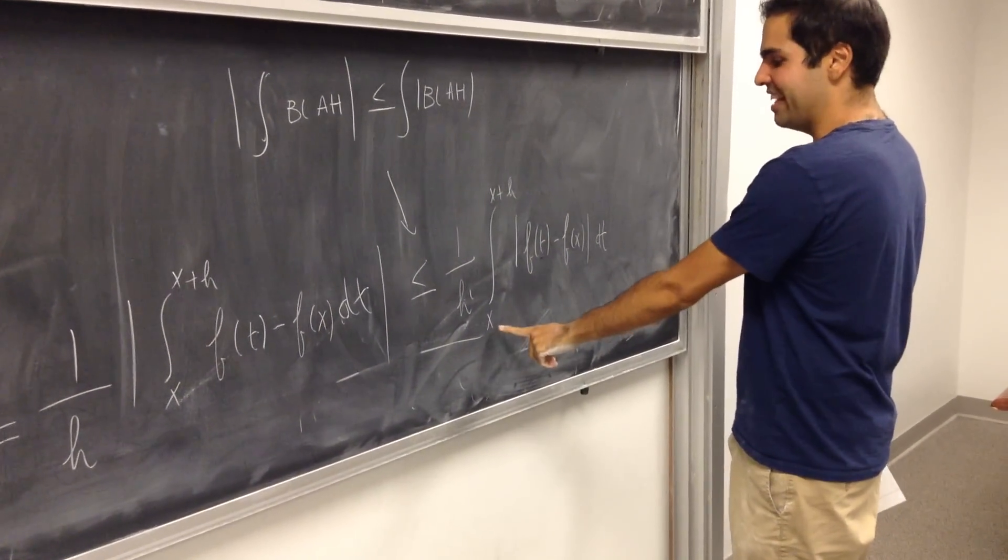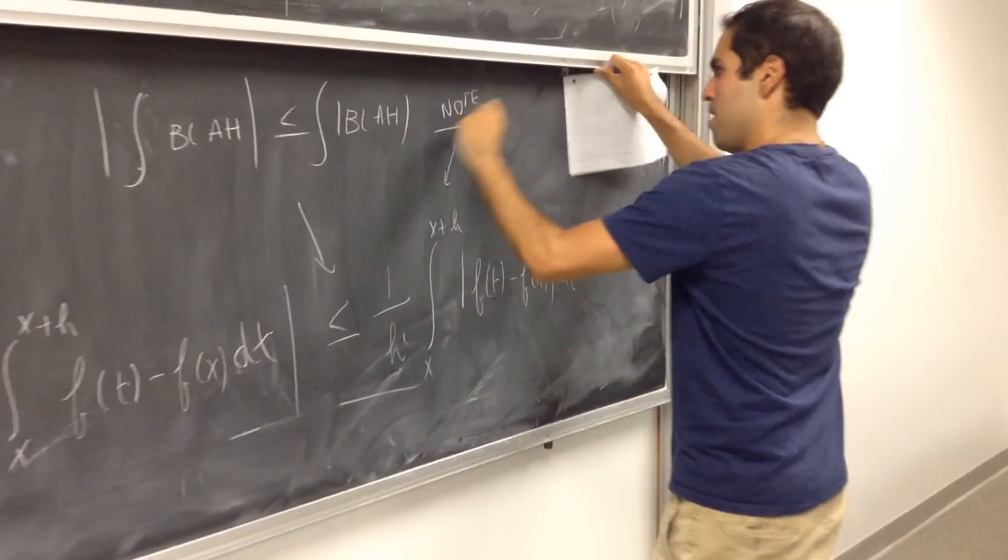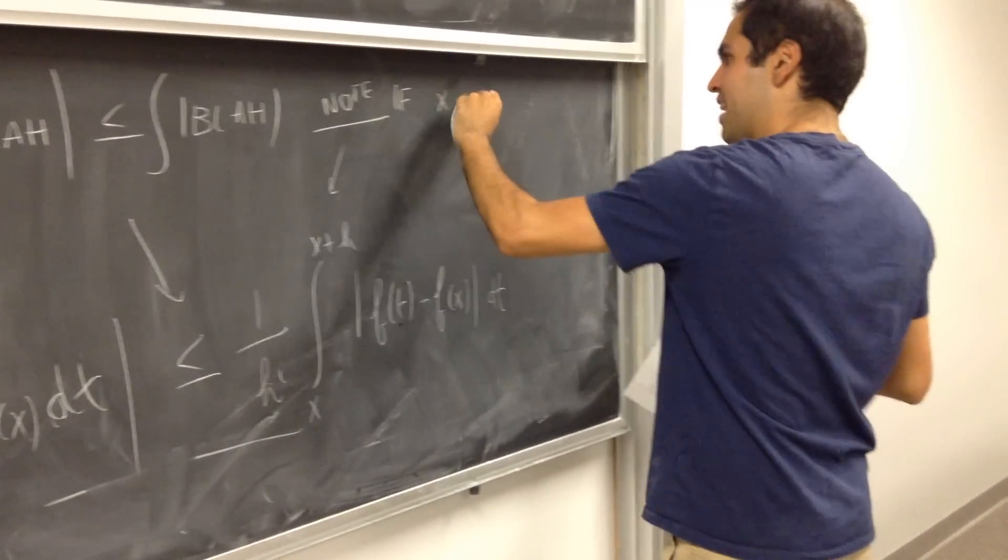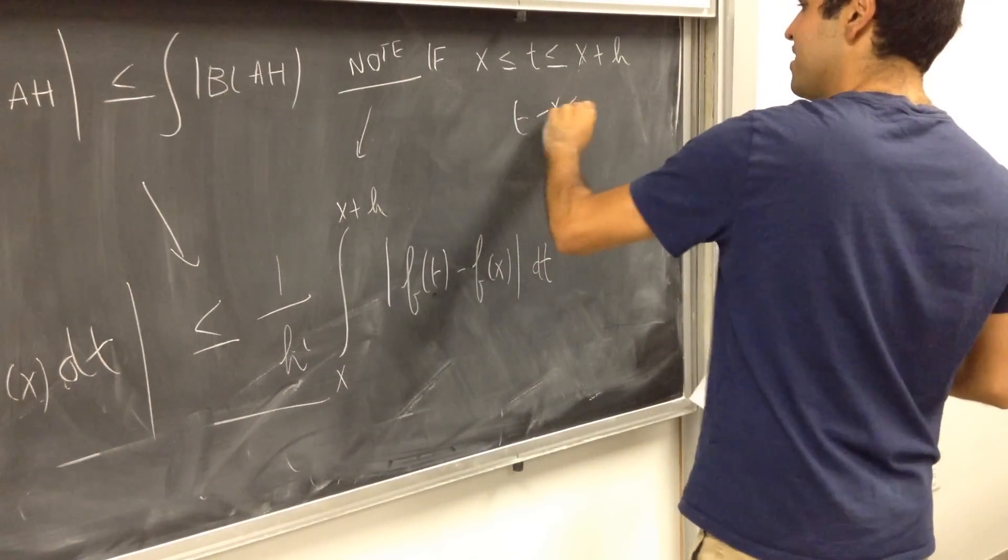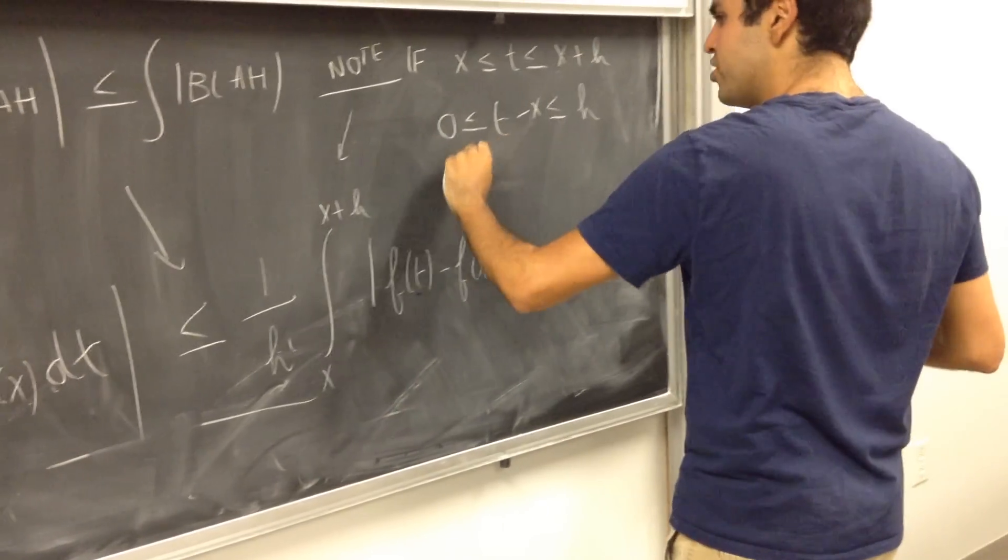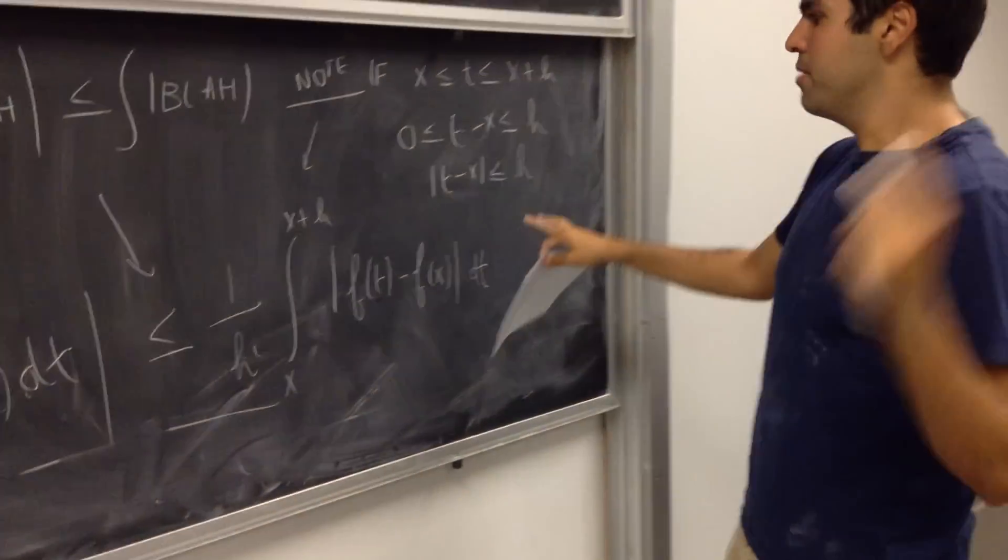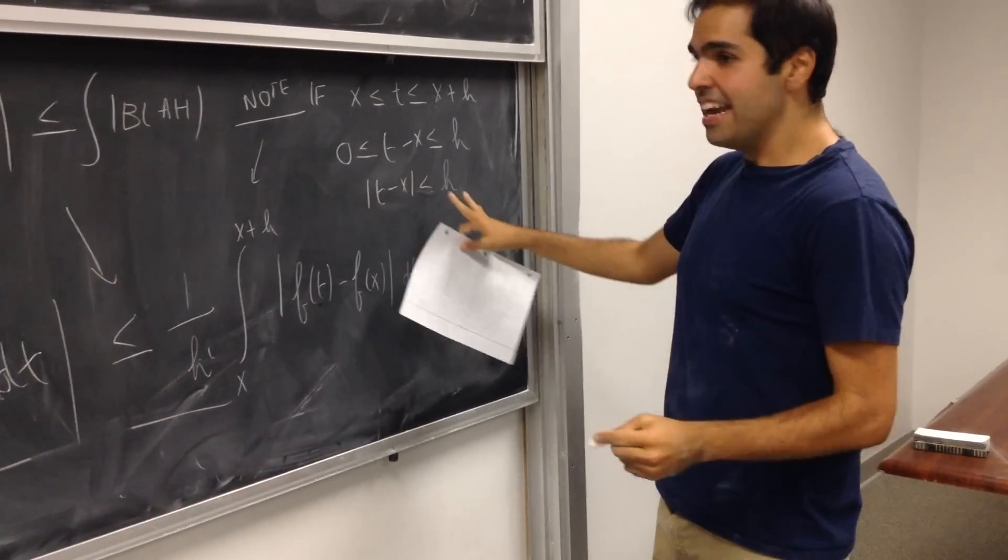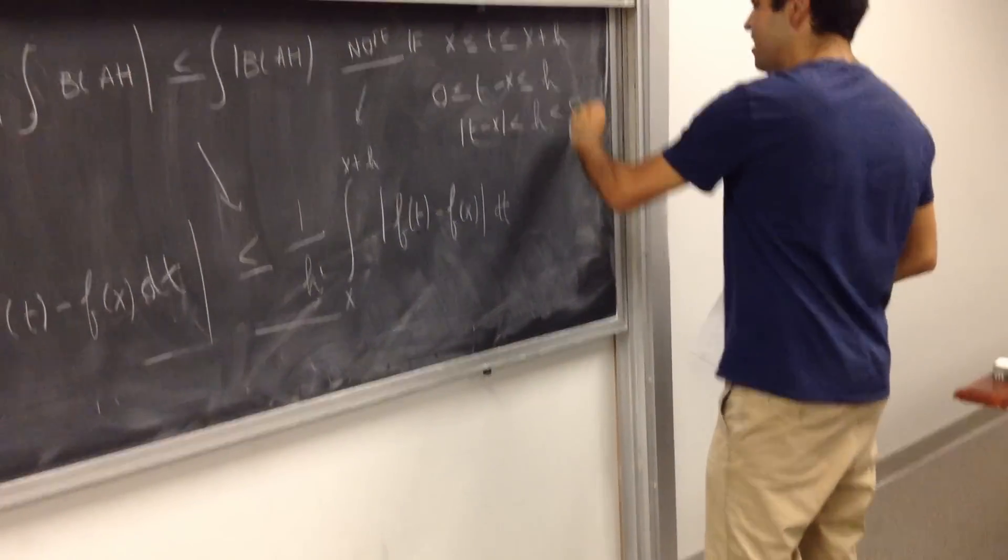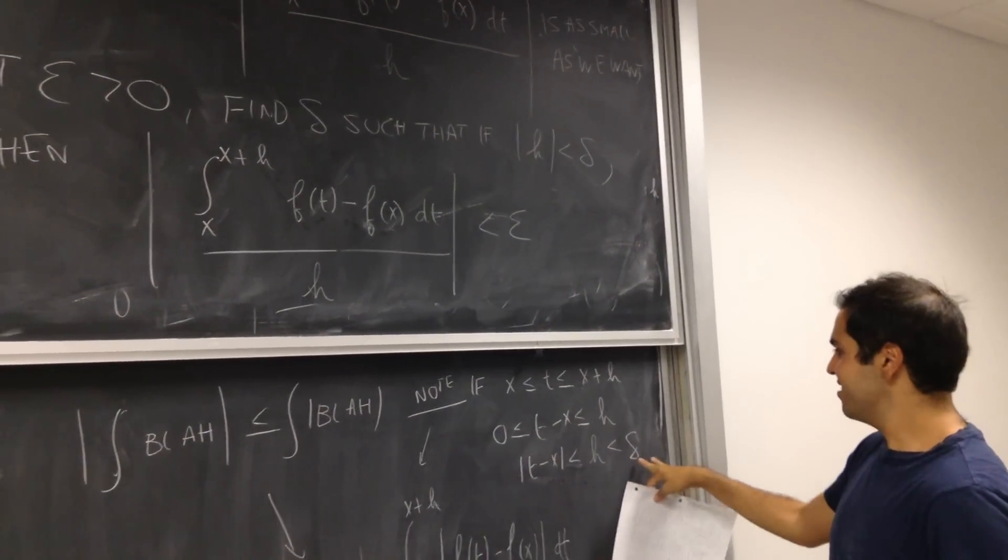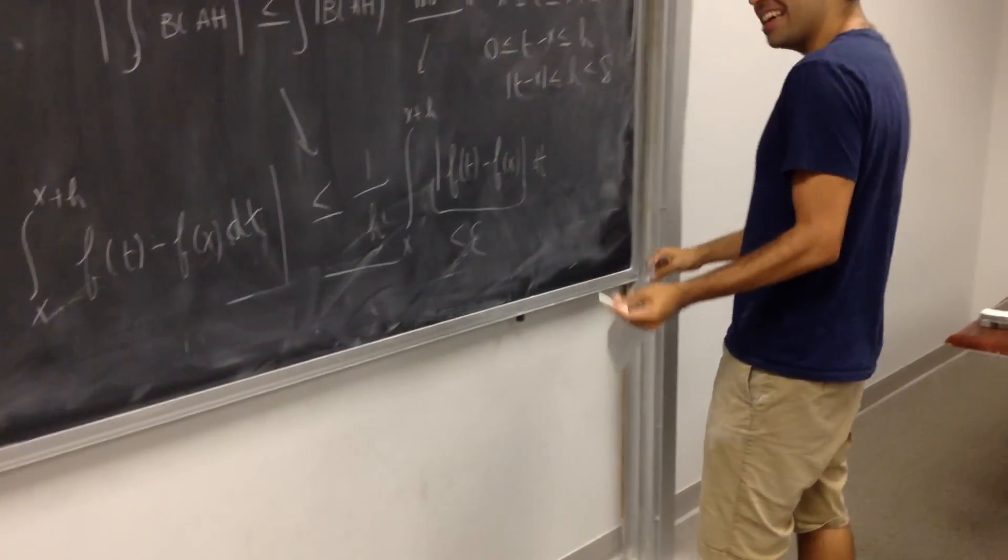Note, if t is between x and x plus h, then t minus x is between 0 and h. So in particular, t minus x is less than or equal to h. But that's precisely what we want because we know that h is less than delta. So t minus x is less than delta, therefore in fact f of t minus f of x is less than epsilon. So the point is we're in the good domain.